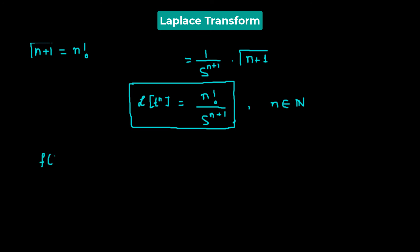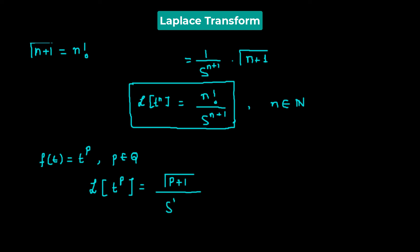We can extend this definition. If we have the function f(t) equals t raised to the power of p, where p is some rational number, then following the same steps the Laplace transform of t^p equals the gamma function of p plus 1 divided by s raised to the power of p plus 1. For the gamma function to exist, p plus 1 must be greater than zero, or p must be greater than negative one.